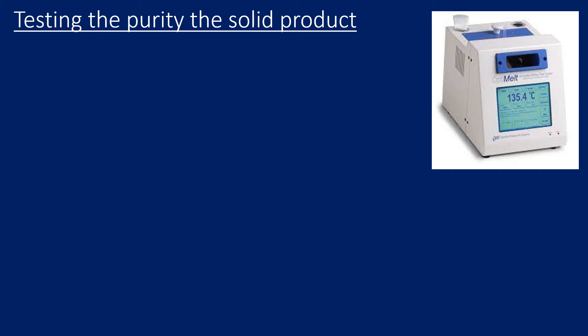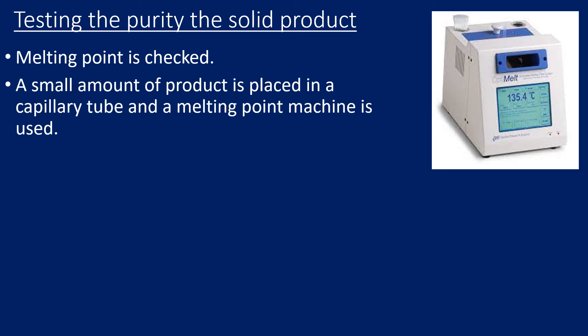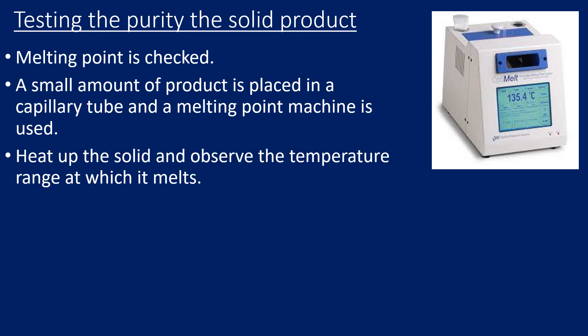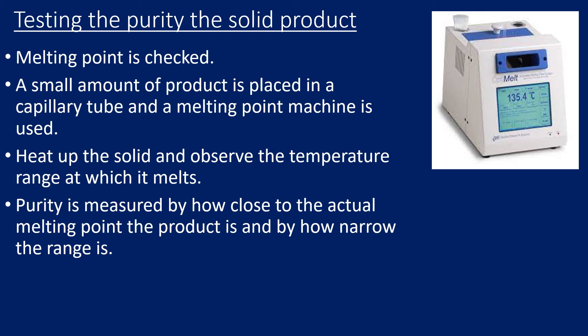We're going to test the purity of our product, and this is done by checking the melting point. We do this by putting a small amount of product in a glass capillary tube and then inside a melting point machine, which heats it up. We observe the temperature at which it begins to melt and the temperature at which it's fully melted — this is called the melting point range. A pure substance will have an exact melting point and a very narrow range, probably only within a couple of degrees, whereas an impure product might have a larger range and a value that does not match the textbook melting point.